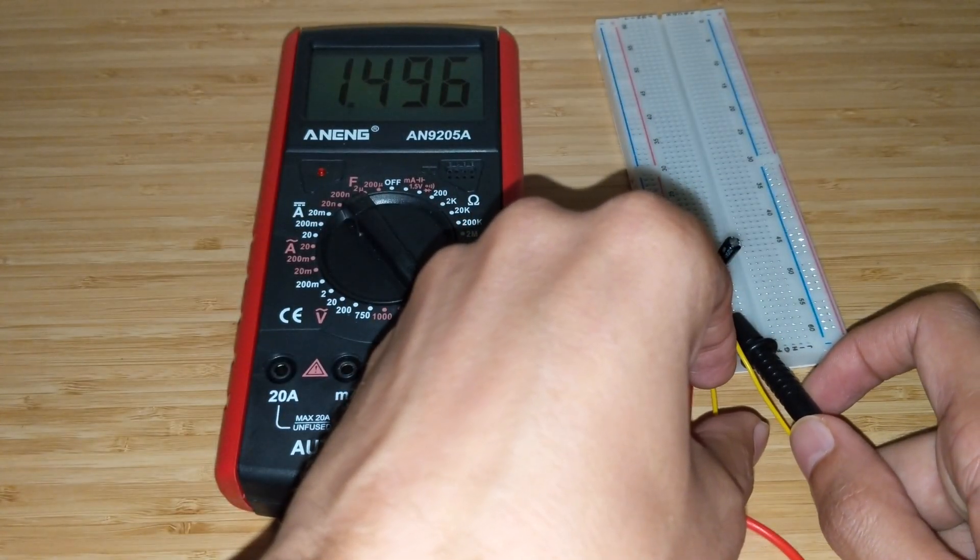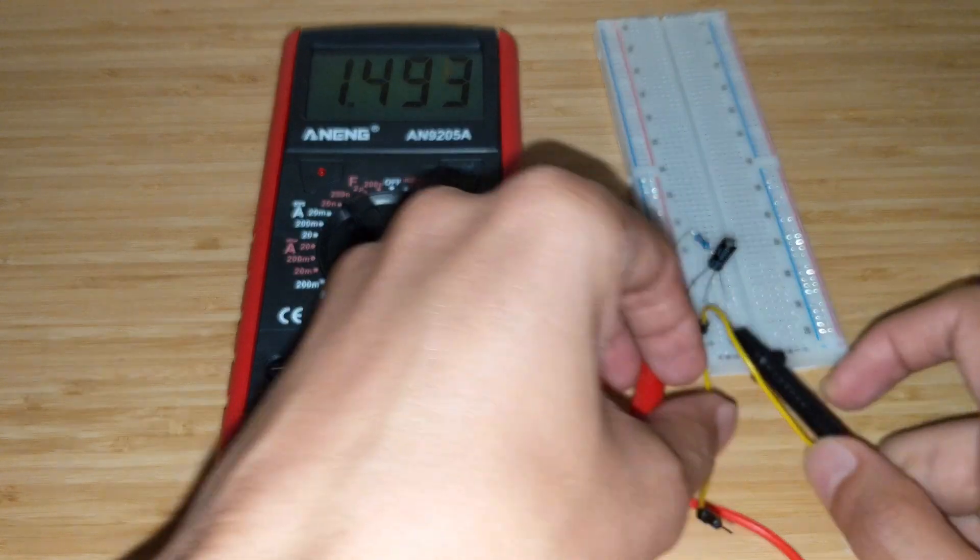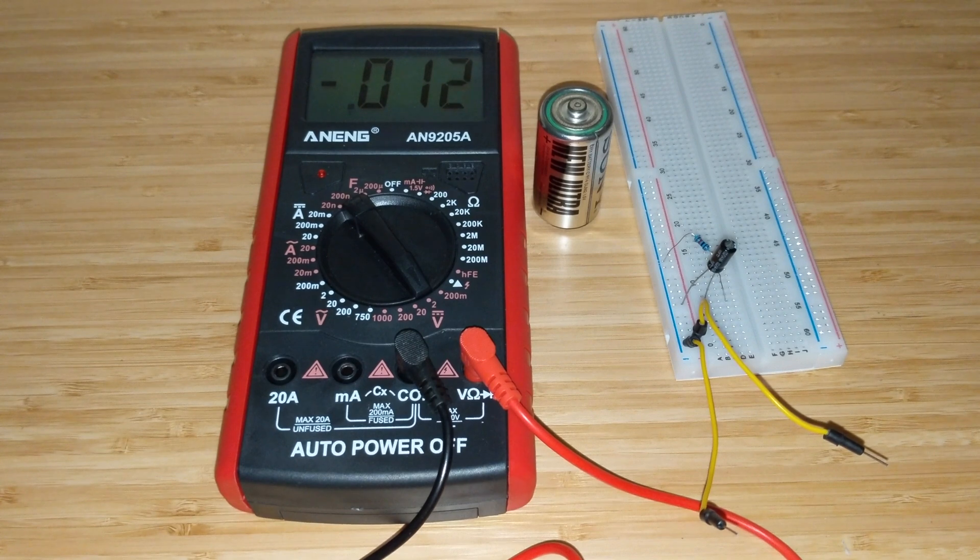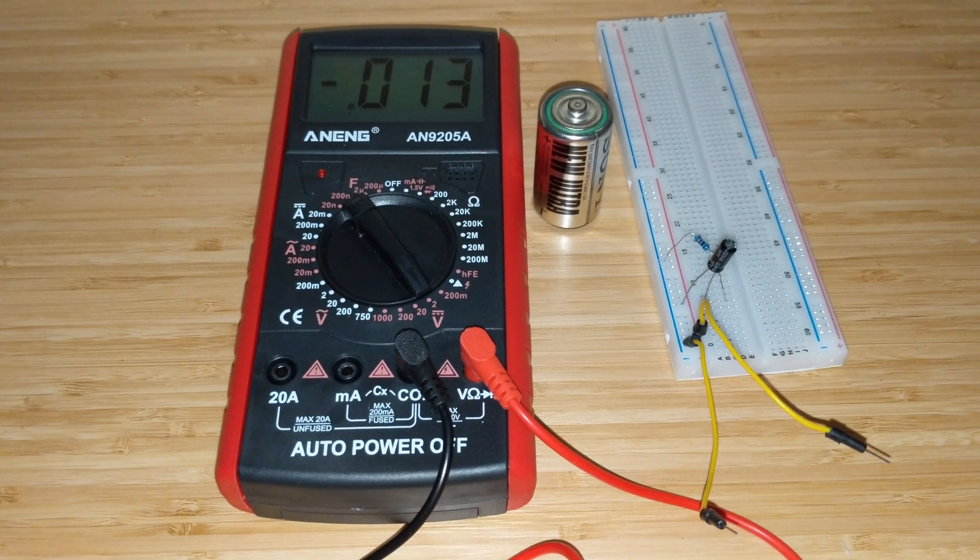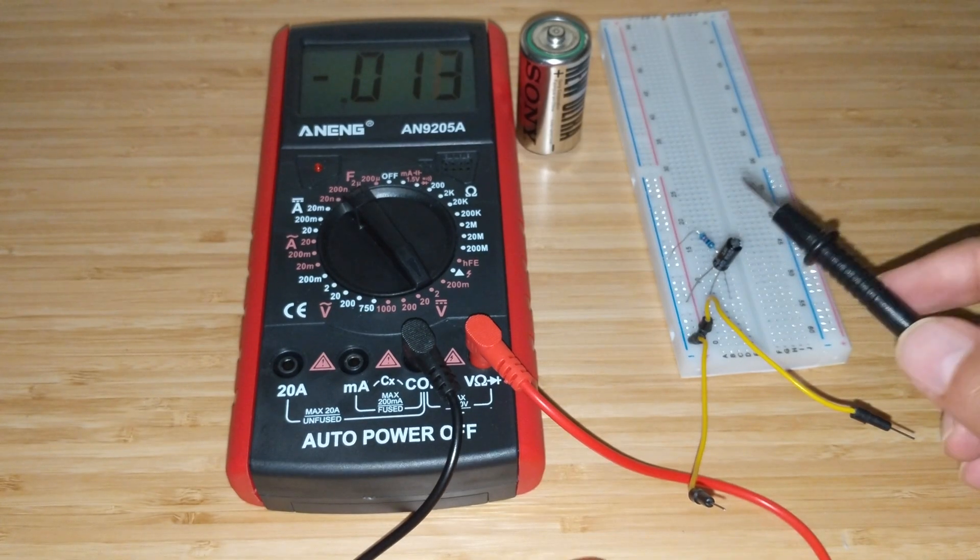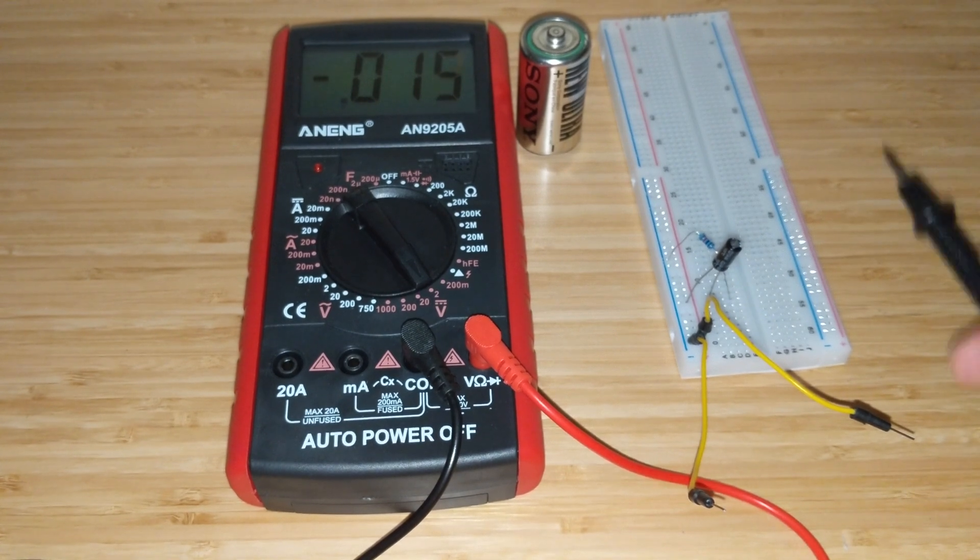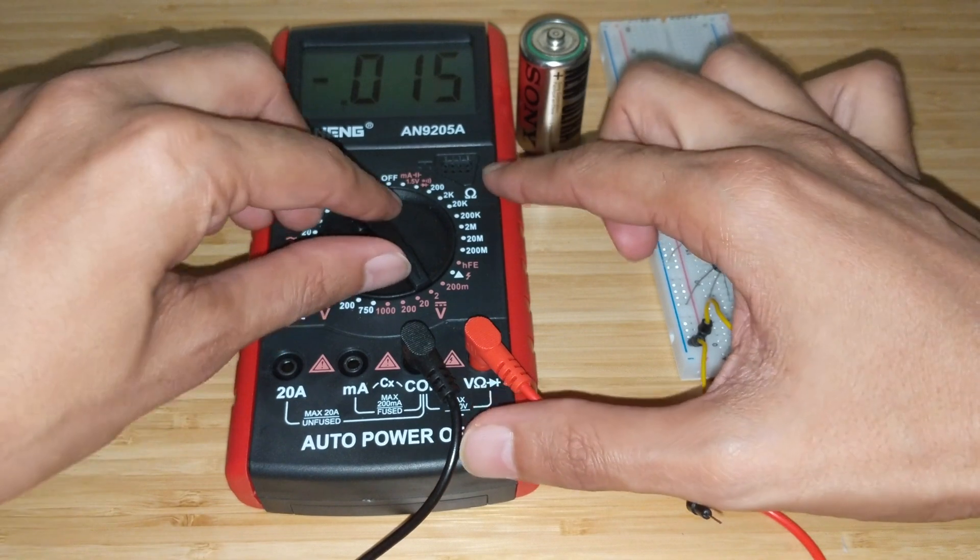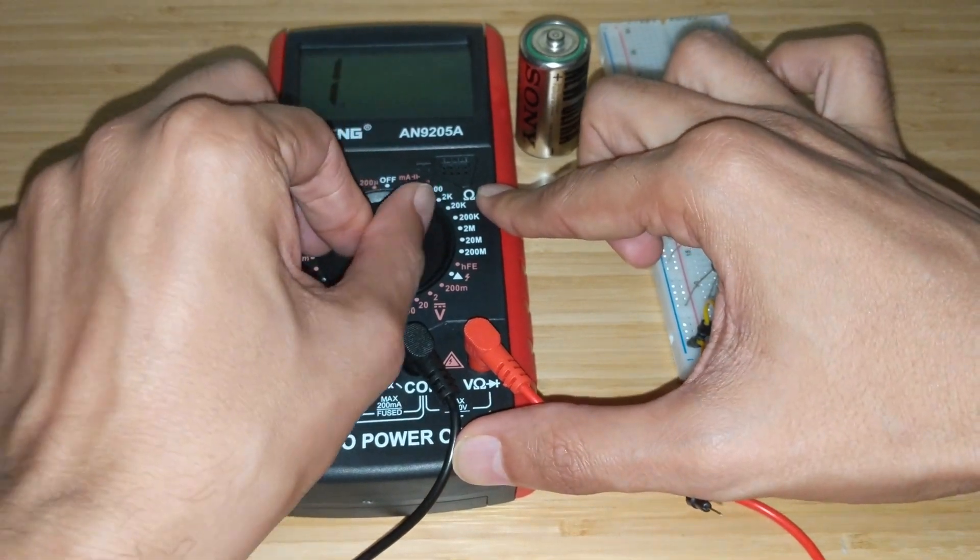Okay, now this is 1.5 volts so yes, I know some of you might be concerned about safety, but this should be okay. Let's see if the capacitor is charged. Yes, and as you can see it's now 1.49 volts. Now what I'm trying to show here is that it doesn't matter if it's the battery or the capacitor, they both charge to roughly 1.4, 1.5 volts.